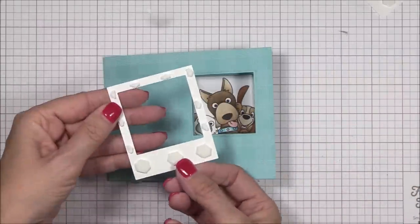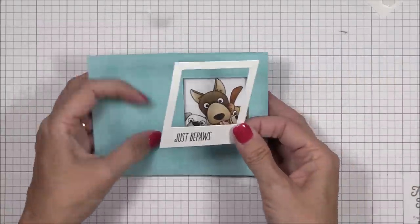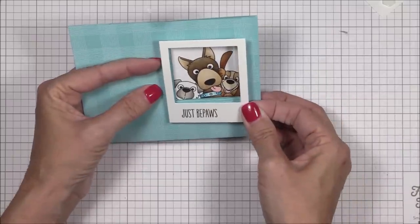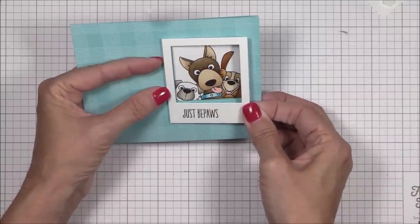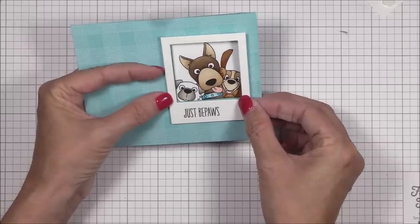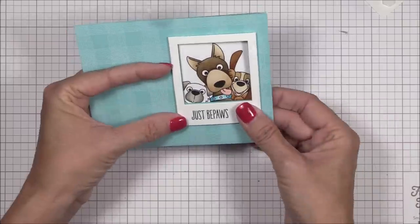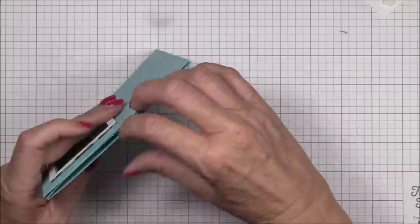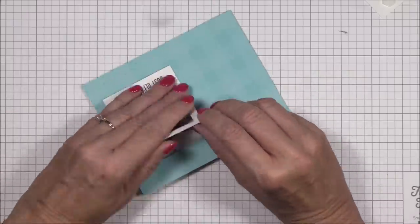I've added some foam squares to the back of the Just Be Paws Polaroid frame, and I'm adhering it to the front of the card, making sure to align the apertures. I didn't remove the release paper from the top foam squares so that I'd still have the ability to jiggle things around a bit before committing to the final stick. Better safe than sorry!